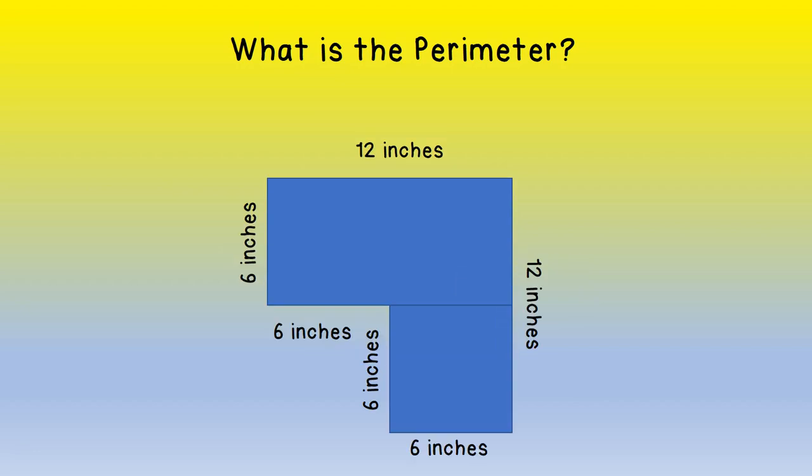Now in this case we have a rectangle and a square that are combined together. All of the sides, 1, 2, 3, 4, 5, 6, all 6 sides of this are labeled and use that information to find the perimeter.